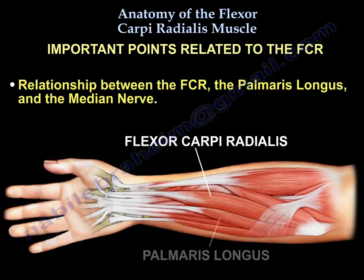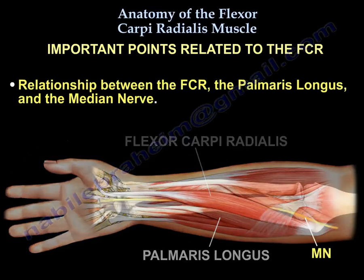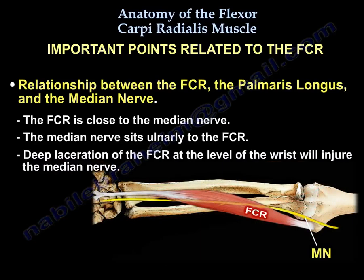Number one: the relationship between the flexor carpi radialis, the palmaris longus, and the median nerve. The flexor carpi radialis is close to the median nerve — the median nerve sits ulnar to the flexor carpi radialis. Deep laceration of the flexor carpi radialis at the level of the wrist could injure the median nerve.